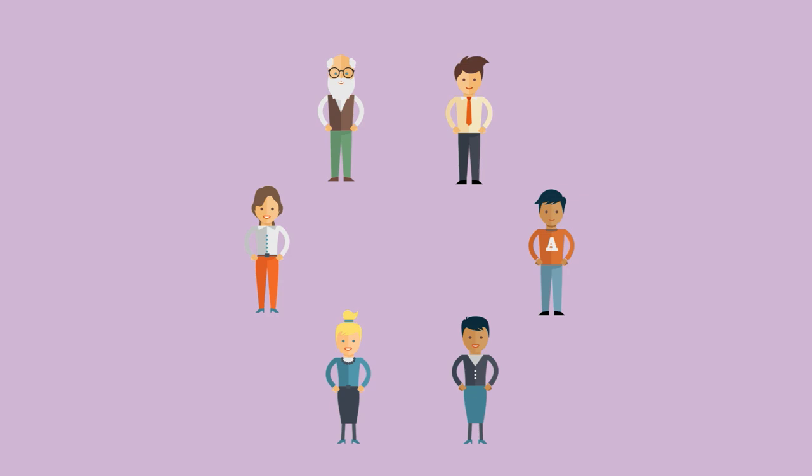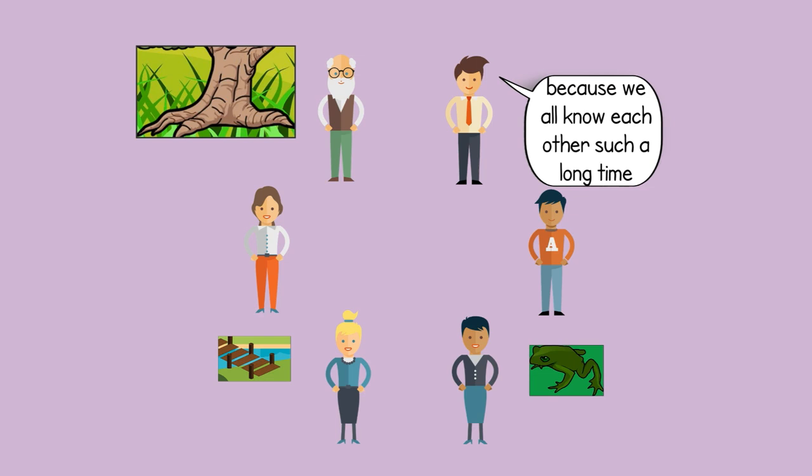One by one, each duo shows their picture to the others and tells why they think it symbolizes the group. In this case, one duo says, we photographed the roots of a tree. It symbolizes the strong foundation of this group because we all know each other such a long time.